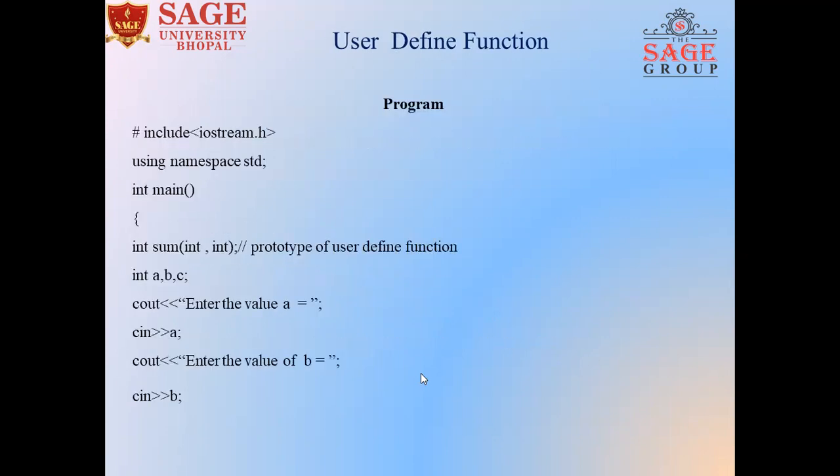This is an example of a user-defined function. First of all, include header files. Hash include iostream.h - the input output stream header file. We will use this header file to access all the data and library functions. And using namespace std.